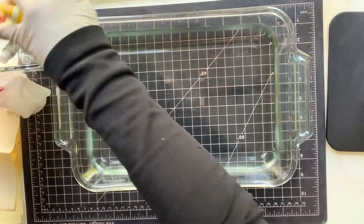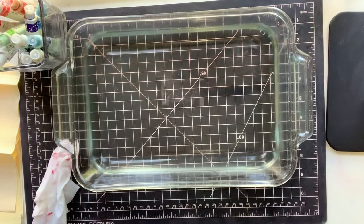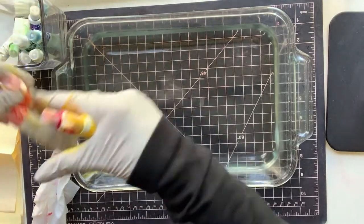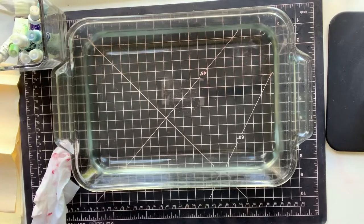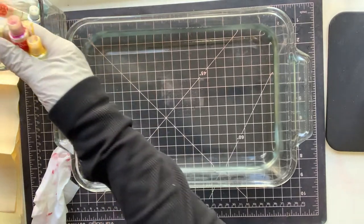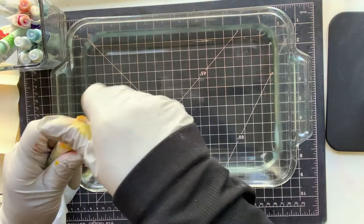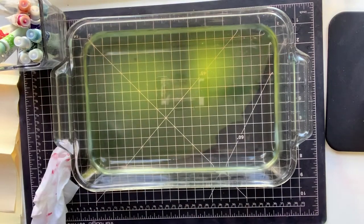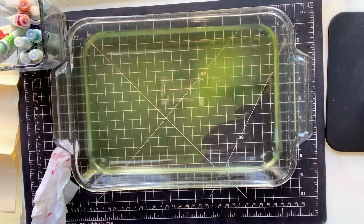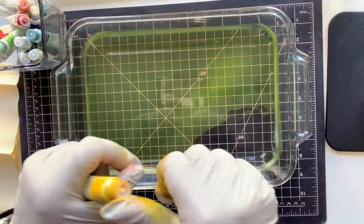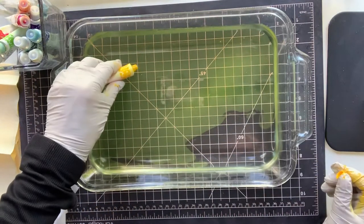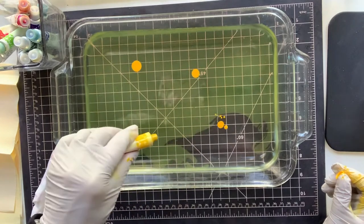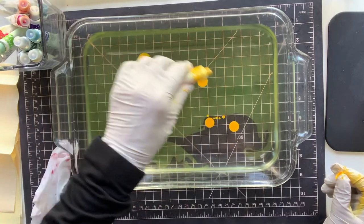I'm going to start with the yellow and I'm just going to put dots down. See, it's not shaken up well enough. It should create a round spot. You see what I mean about shaking it up really well.